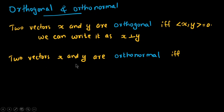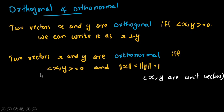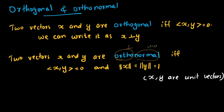The next term is orthonormal. Two vectors x and y are orthonormal if and only if their inner product is equal to zero and the norm of x equals the norm of y equals 1 — meaning x and y should be unit vectors. 'Ortho' means perpendicular and 'normal' means unit vectors. So perpendicular unit vectors are called orthonormal vectors.